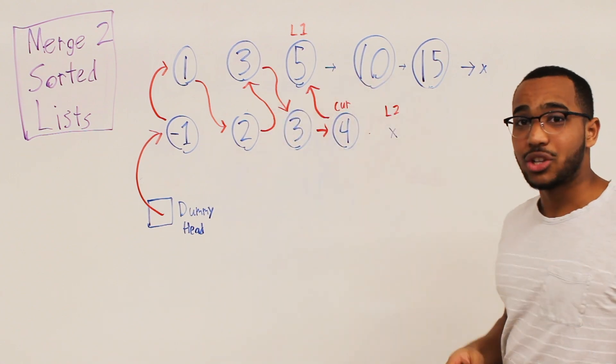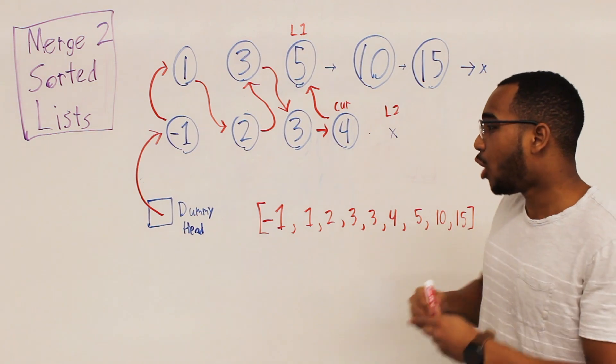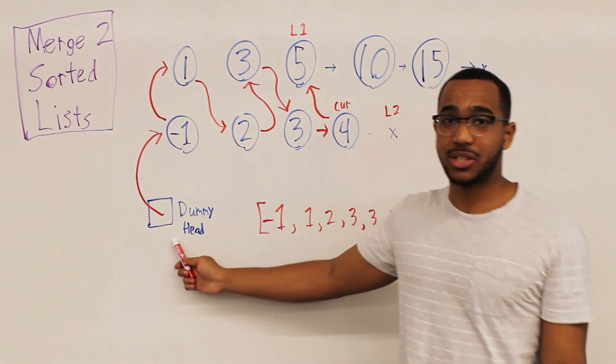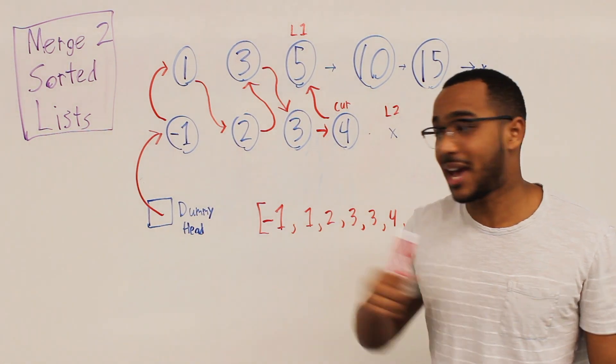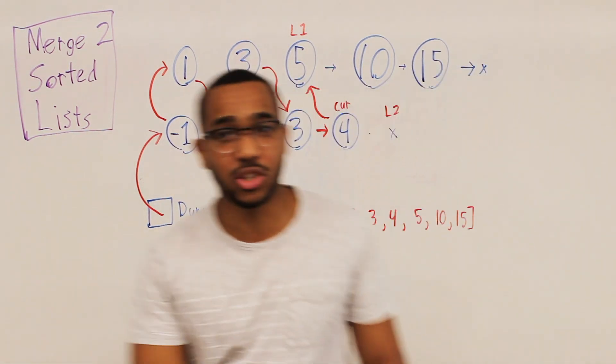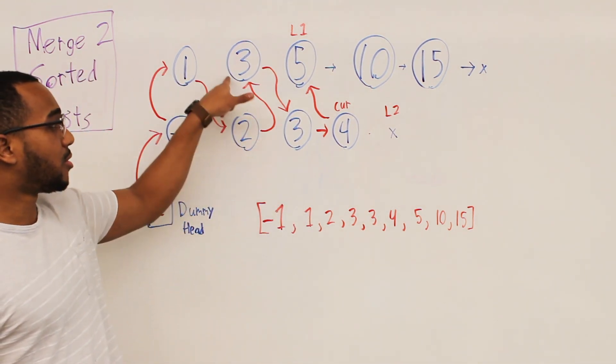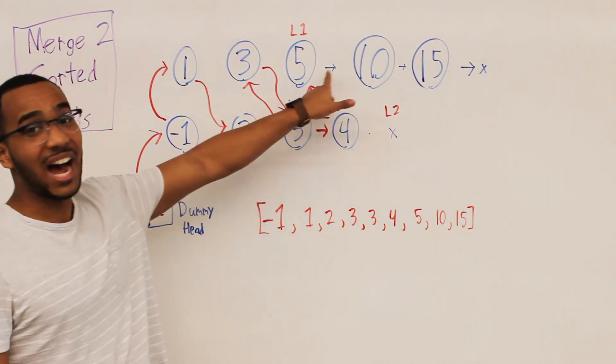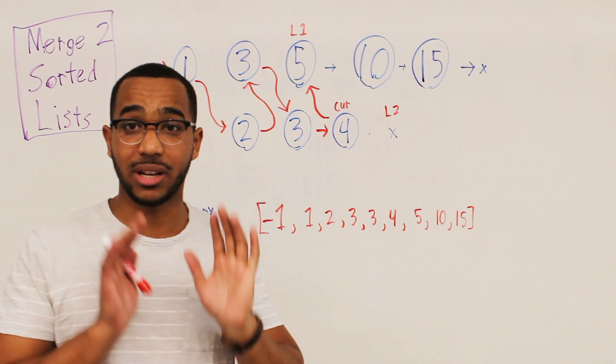And this is our final linked list. So let's write it out. So at the end of our function, all we do is, hey, we have a reference to the dummy head. Point the dummy head dot next. Return the value of dummy head dot next. Return the pointer to this node. When we have the pointer to this node, then bang, we have our whole list. Negative 1, 1, 2, 3, 3, 4, 5, 10, 15. And this is how you merge a sorted list.